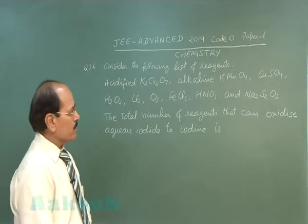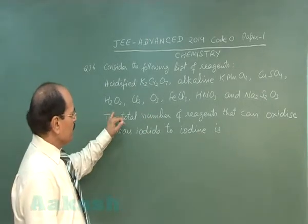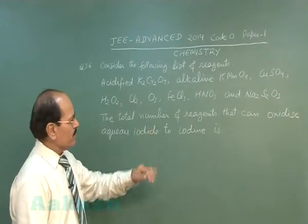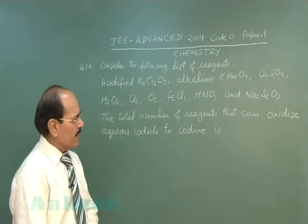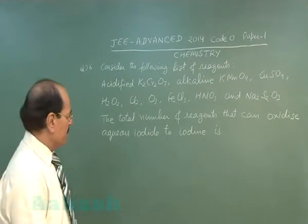copper sulfate, hydrogen peroxide, chlorine, ozone, ferric chloride, nitric acid, and sodium thiosulfate. The total number of reagents that can oxidize aqueous iodide to iodine is?